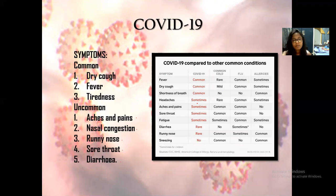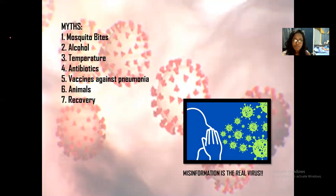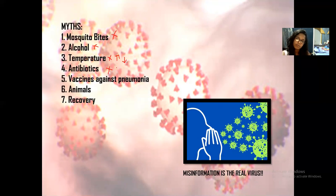There are many misconceptions and myths surrounding the disease that may cause harm if not corrected. Mosquito bites do not spread the virus. Alcohol consumption does not kill the virus — in fact, it may cause damage to your liver, which is an important component of your immune system. High temperatures or freezing temperatures do not kill the virus, so all areas throughout the world are prone to getting infected. Antibiotics can only work against bacteria and should not be taken without medical guidance, as they cannot kill any virus.